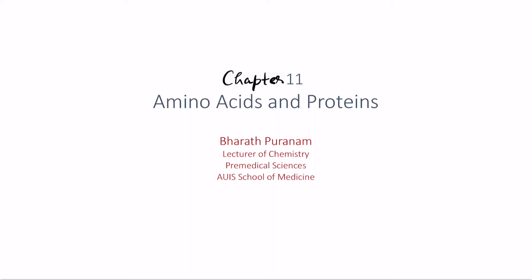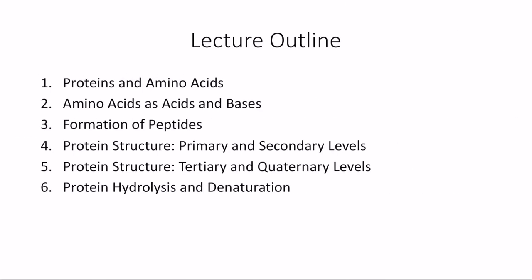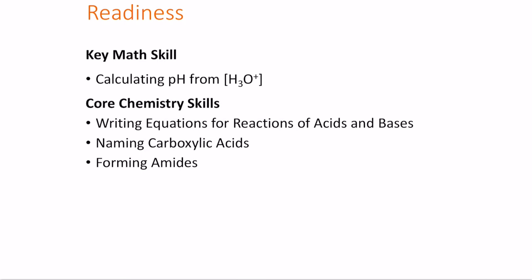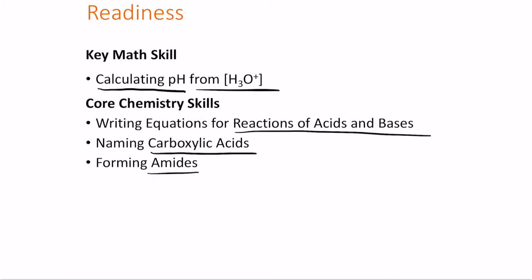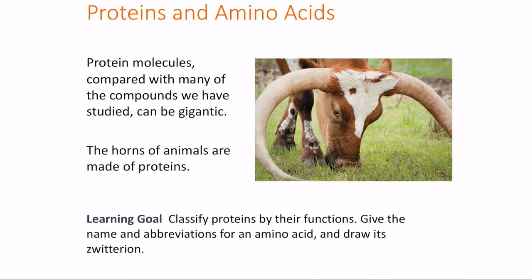Hello everyone, welcome to Chapter 11. In this chapter we'll talk about amino acids and proteins. We'll discuss how amino acids can work as acids and bases, the formation of peptide bonds, protein structure at the primary, secondary, tertiary, and quaternary levels, and finally protein hydrolysis and denaturation. Before this chapter, please review how to calculate pH from H3O+, write equations for acids and bases, name carboxylic acids, and form amides.